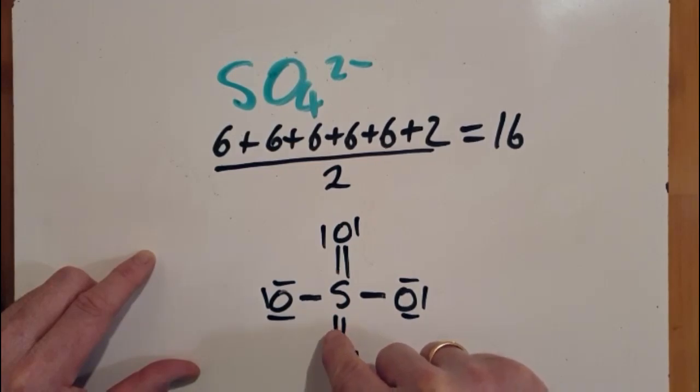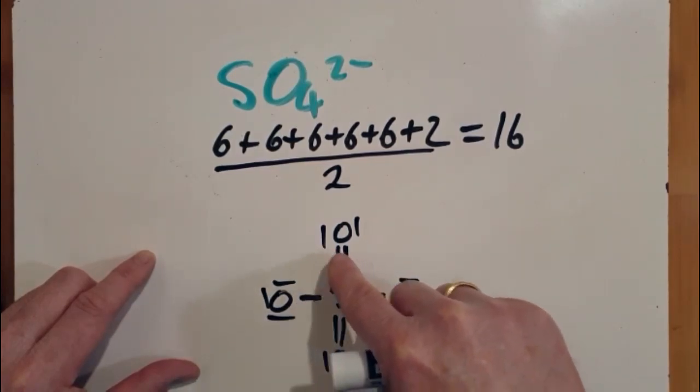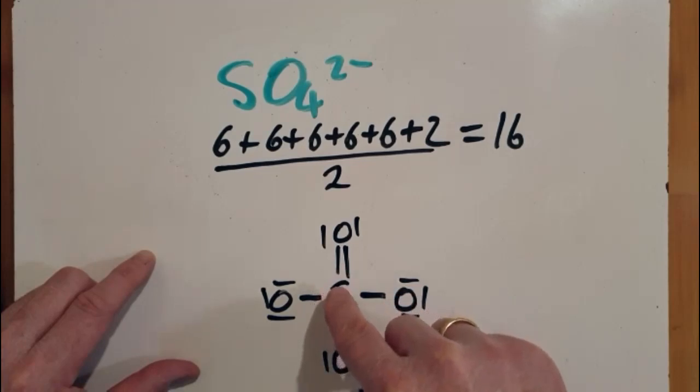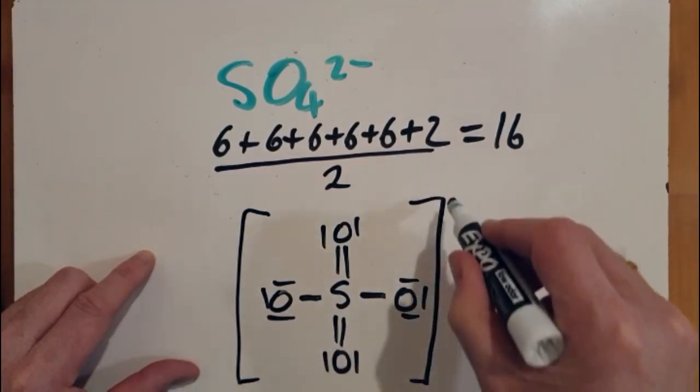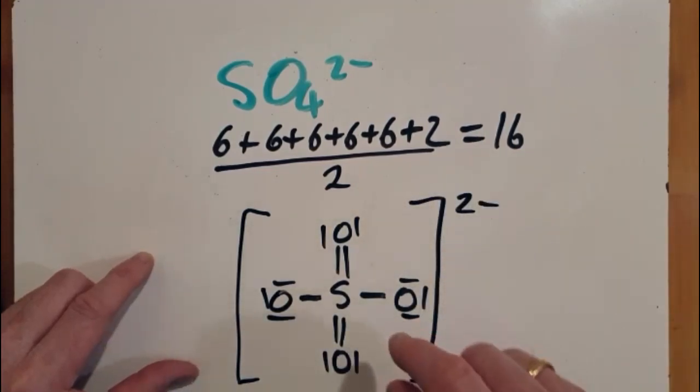Sulfur has six lines, six pairs of electrons, that's going to be 12 electrons, like we said at the beginning. And oxygen has the stable octets. Don't forget square brackets and the two minus, or you might lose a point. That's the Lewis structure.